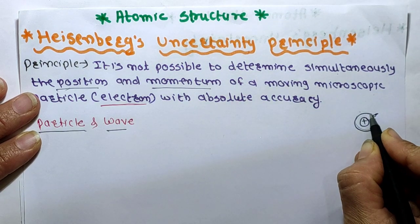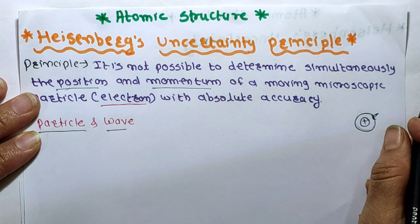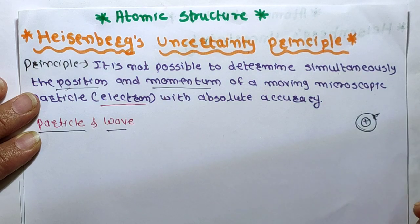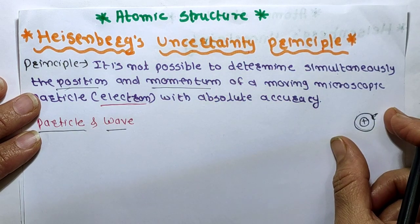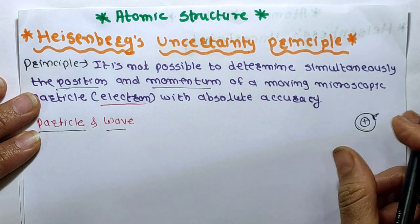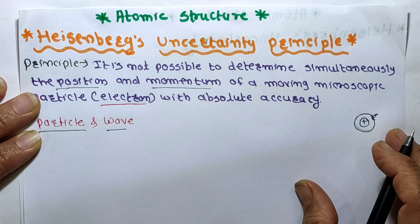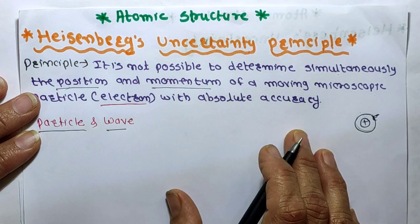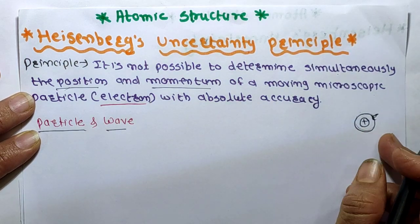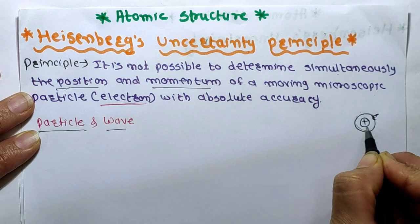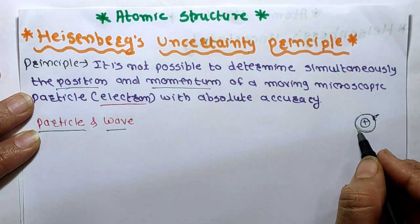Niels Bohr stated that electrons revolve in a concentric circular path with fixed velocity, fixed momentum, and fixed energy. But because they revolve with fixed velocity and fixed energy, we cannot observe them directly. Heisenberg's uncertainty principle states that we cannot simultaneously determine the position and momentum of microscopic particles like electrons accurately.